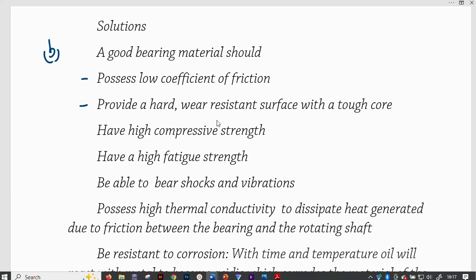It should also provide a hard wear resistant surface with a tough core. It means that if this bearing material does not possess these properties, then remember there is rubbing against the surfaces of the races and also maybe on the retainers. So, if it is not wear resistant, then it is going to fail faster and therefore cause a downtime of that particular machine that is transmitting power somewhere else. Of course, that involves rotation with this particular bearing. So, to avoid that, you should make sure that to manufacture a better bearing material, you should have that material that is hard and is wear resistant.